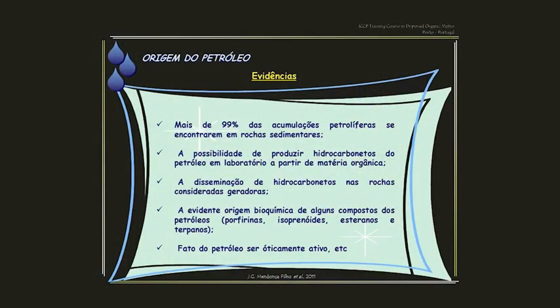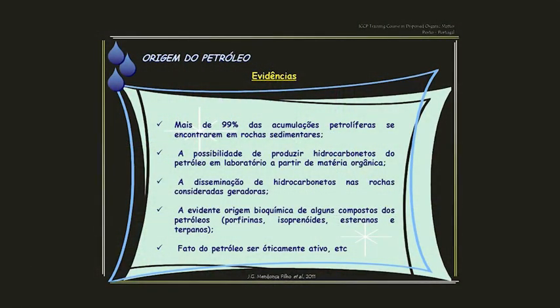As principais evidências da origem orgânica do petróleo são: mais de 99% das acumulações petrolíferas encontram-se em rochas sedimentares; a possibilidade de produzir hidrocarbonetos em laboratório a partir de matéria orgânica; a disseminação de hidrocarbonetos nas rochas geradoras; a evidente origem bioquímica de compostos como porfirinas, isoprenoides, esteranos e terpanos; e o fato de o petróleo ser oticamente ativo, que é uma característica de compostos orgânicos e não de substâncias inorgânicas.